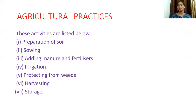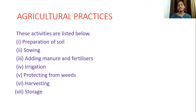Now we can move on to the next topic that we discussed in the previous class — agricultural practices. Why do we need agricultural practices? For the good, large-scale production of a crop we have to maintain agricultural practices. The activities include: preparation of soil, adding manure and fertilizer, irrigation, protection from weeds, harvesting, and storage. Today we are going to discuss the topic: preparation of soil.